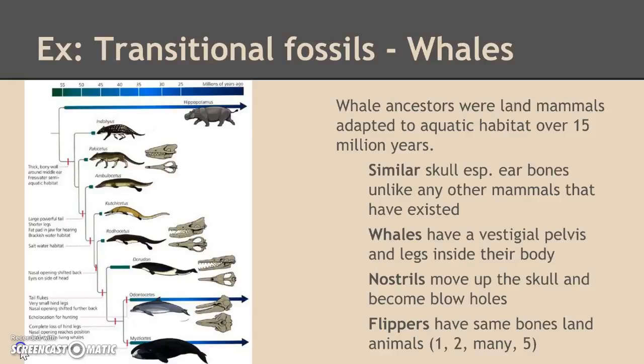I chose the specific example of whale evolution and the transitional fossils that demonstrate that. On the left, you can see my picture is a phylogenetic tree of the ancestry of current and extant — which means living, currently living — dolphins and whales. In that tree, you can actually see to the left it gives a description of exactly which new trait has been introduced or has developed. The ancestors of whales were land mammals that adapted to an aquatic habitat, and as you can see in the diagram, it's over 15 million years.